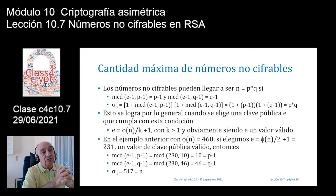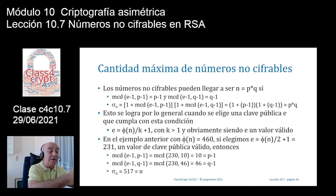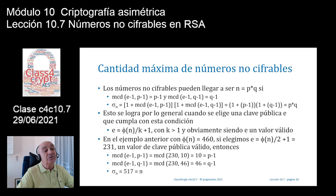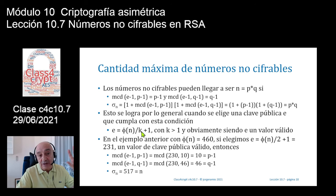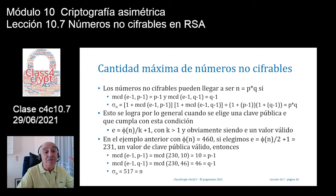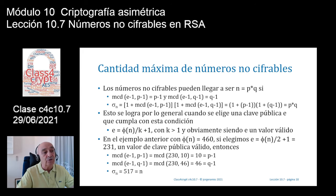La clave pública es inmensamente pequeña comparada con φ(N): φ(N) tiene 2048 bits y la clave pública es de solo 17 bits. En el hipotético caso en que esa clave pública tuviese alguna relación con φ(N)/k + 1, ese k sería un número inmensamente grande de miles de bits, con lo cual vamos a ver que en claves reales no habrá estas cosas tan raras.